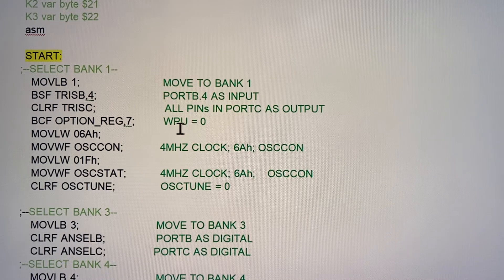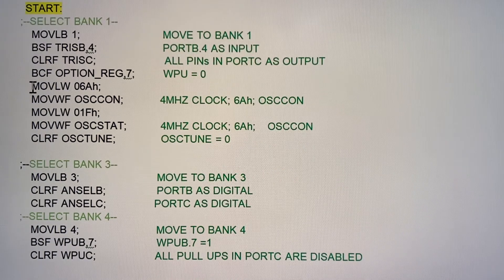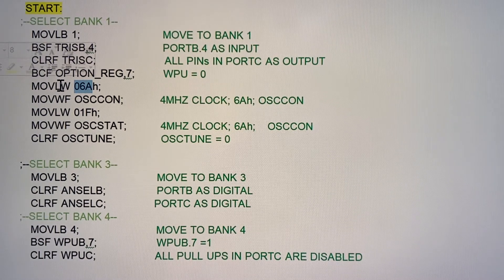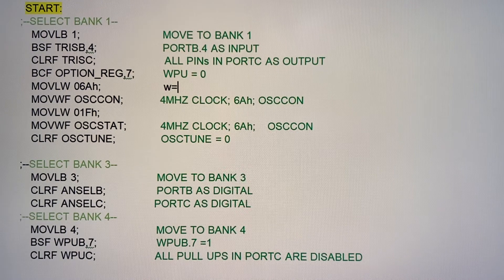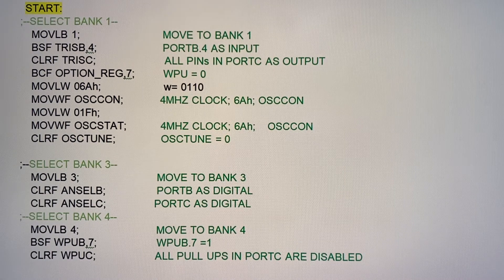I move this literal, hexadecimal number 6A, to W. So W is equal to 6A hexadecimal. In binary, 6 is 0110 and A is 1010, so this is 6A hexadecimal. The source is the literal and the destination is W — W equals 6A hexadecimal.